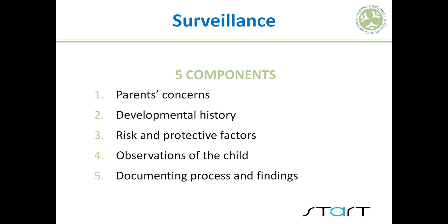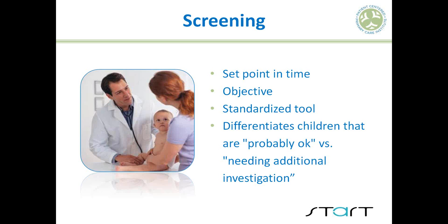Screening, on the other hand, occurs at particular points in time. The American Academy of Pediatrics recommends that all children receive standardized developmental screening at their nine-month, 18-month, and 30-month — or as an alternate, 24-month — well child visits. It is objective, not the subjective process we do with surveillance, and it uses a standardized tool that is reliable and easy to interpret, differentiating children who are probably okay versus those needing additional investigation. It is not diagnostic.